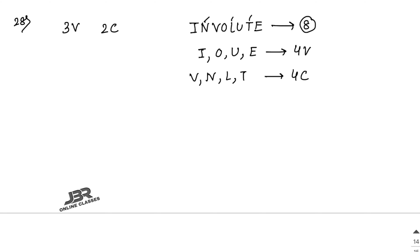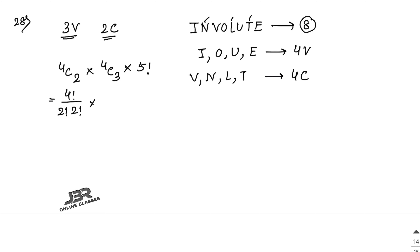We need 3 vowels and 2 consonants. So for vowels it is 4C3, and for consonants it is 4C2. The word has 3 + 2 = 5 letters, so we can rearrange in 5 factorial ways. Multiplying: 4C3 × 4C2 × 5!.